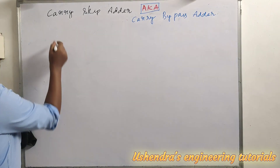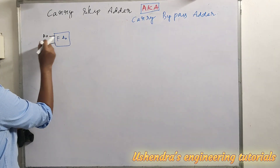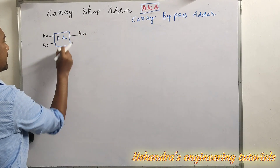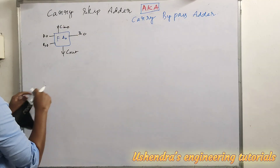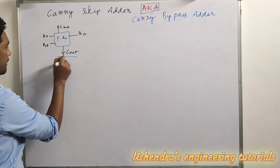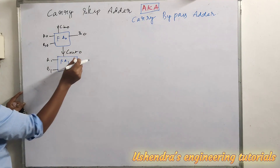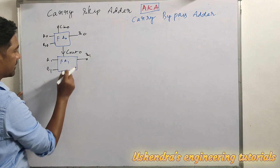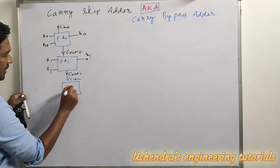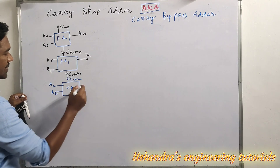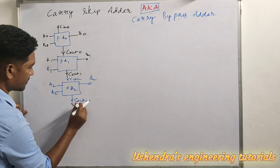Considering a 4-bit adder which has full adders FA0 through FA3. Starting with full adder FA0, which has inputs A0 and B0, output sum S0 and carry out C_out0. For a full adder we also have carry in Cin0 from the previous stage. The next stage FA1 has inputs A1, B1, and C_out0 as carry in, outputting sum S1 and C_out1. FA2 has inputs A2, B2 and outputs sum S2 and C_out2, which is also Cin3 for the next stage.